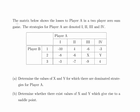In this presentation we are going to look at game theory. The matrix below shows the losses, that's important, just be mindful of that, to Player A in a two-player zero-sum game. The strategies for Player A are denoted 1, 2, 3, and 4, so it has four strategies.